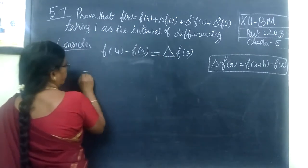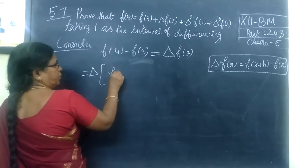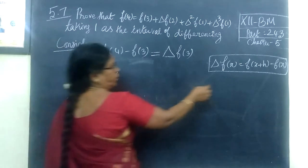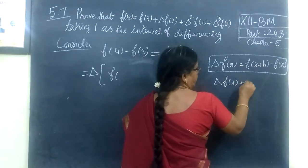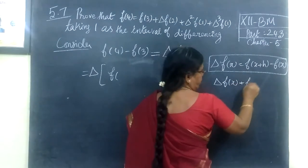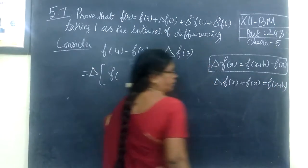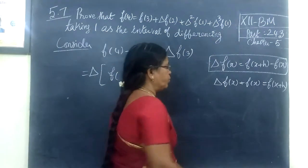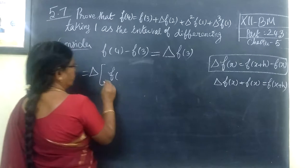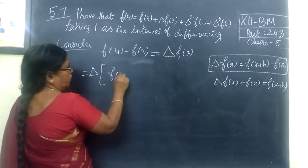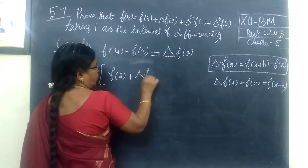So that is equal to del of F3. In the del of F3 — so this is del of F3. Del of F3 is there. Then del of F2, press del of F2.